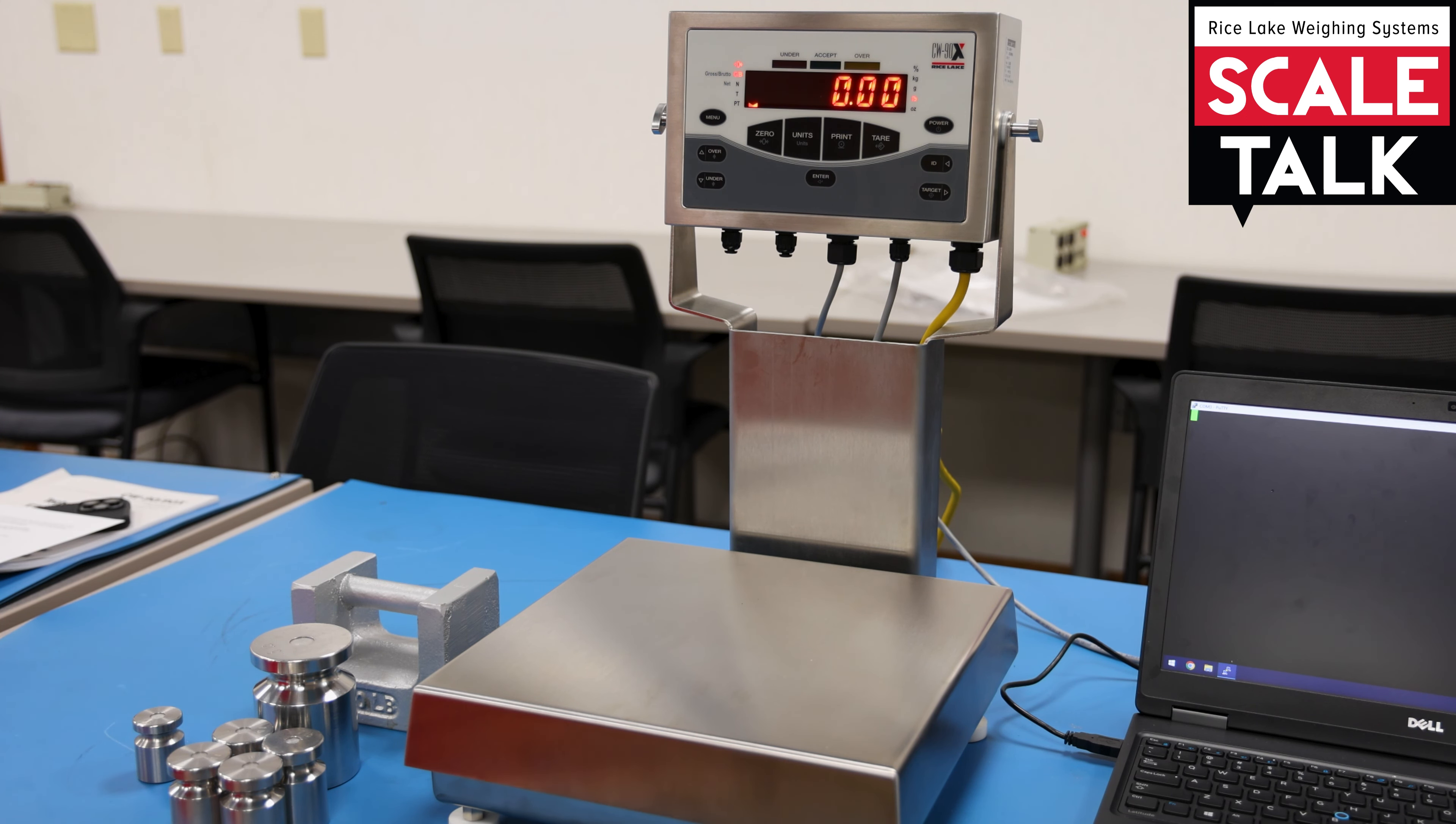So, as you can see, we've got a CW90X here with a bench scale. By default, the CW90X is set up in what we would call a range mode. And so what you're going to do is simply set an over value and an under value. Whatever falls within that window is going to be accepted.